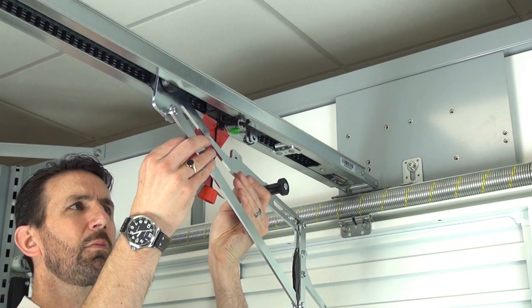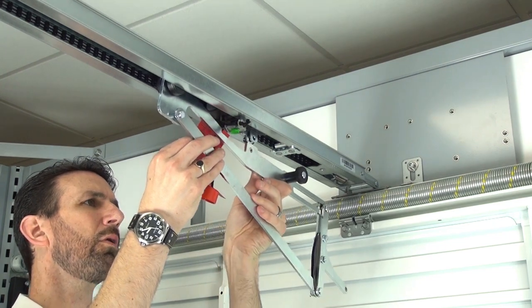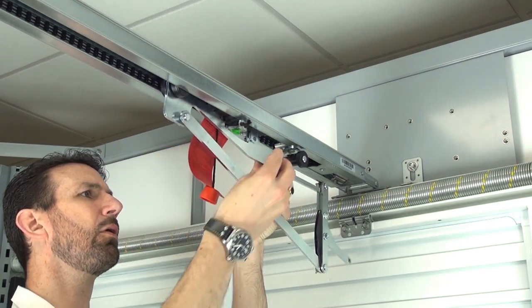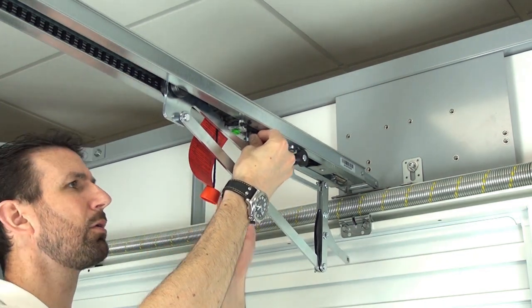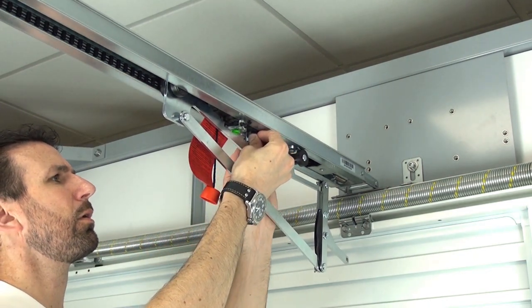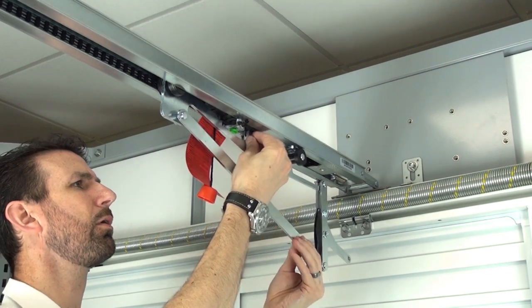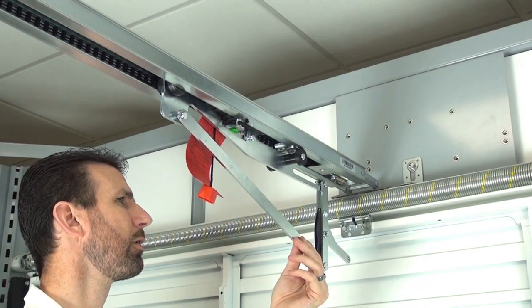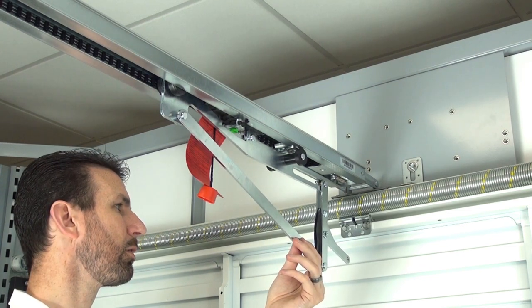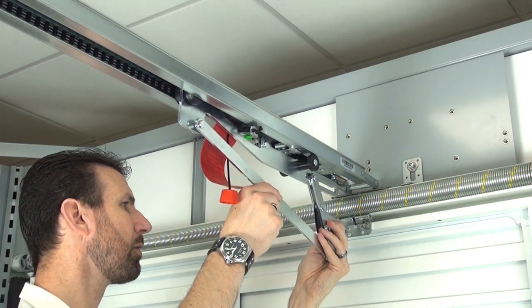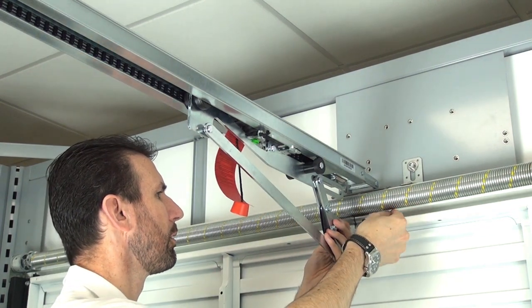Push the rear guide wheel up into the boom track and attach the activating arm to the slide carriage by inserting a pin and spring clip through the mounting point on the slide carriage. Finally, attach the activating arm to the bracket at the top of the door using a pin and spring clip.